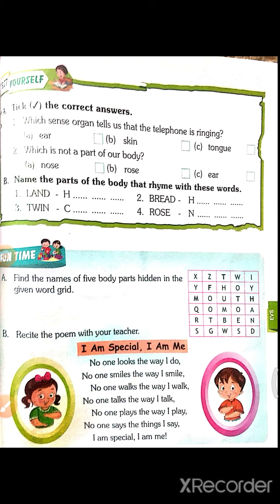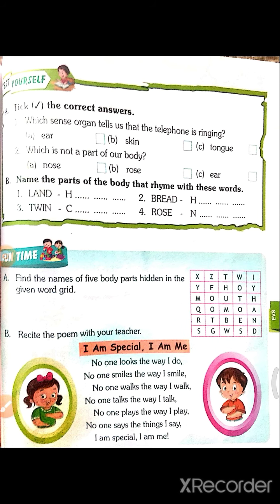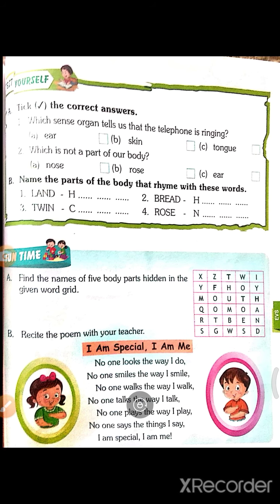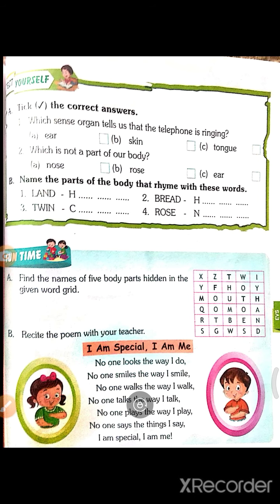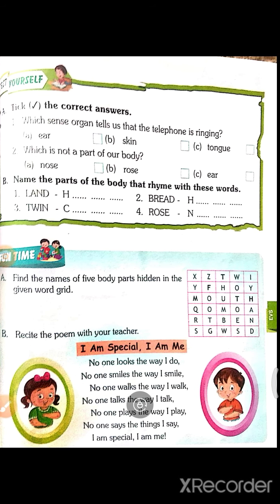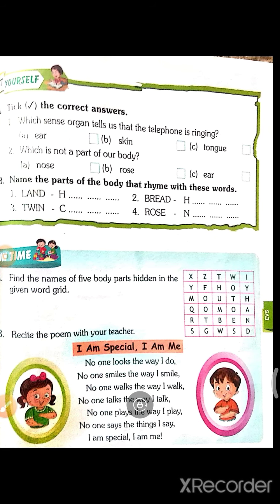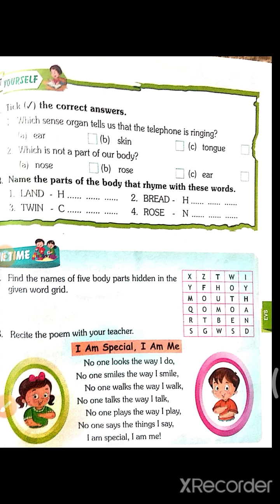Read the poem with your teacher. 'I am special, I am me. No one looks the way I do. No one smiles the way I smile.'